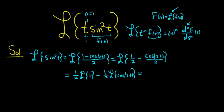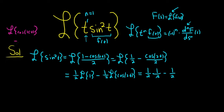This equals 1/2 times — the Laplace of 1 is 1/s — minus 1/2. For the Laplace of cosine(kt), the way I memorize it is: cosine has the s, so it's s over s² plus k². Sine has the k, cosine has the s. In this case k is 2, so it'll be s over s² plus 4, because 2 squared is 4.